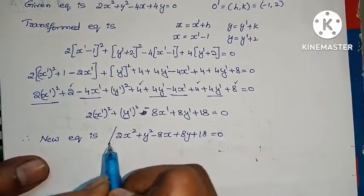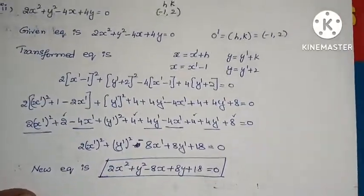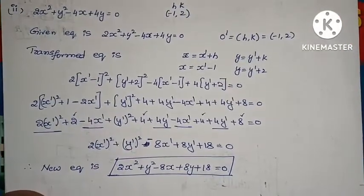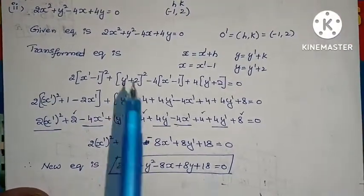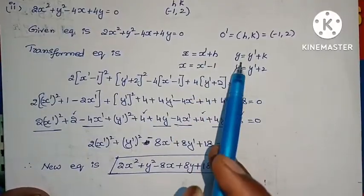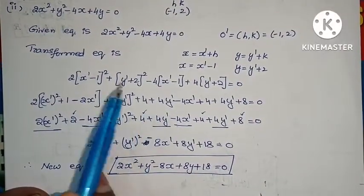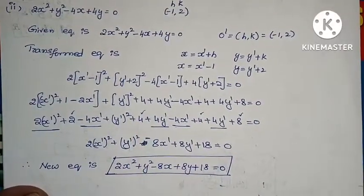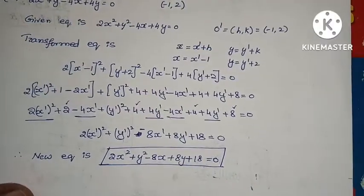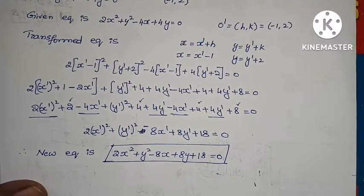This problem is very simple. x equals x dash plus h, y equals y dash plus k. Substitute using (a plus b) whole square and (a minus b) whole square formulas to solve. The answer is solved — it is very simple.